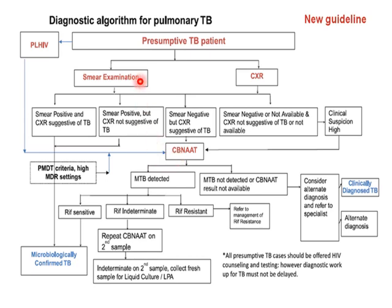The presumptive TB patient is sent for smear examination and chest X-ray. If the smear is positive and the chest X-ray is suggestive of tuberculosis, it is microbiologically confirmed tuberculosis. If the smear is positive but the chest X-ray is not suggestive, it is still microbiologically confirmed tuberculosis because the ZN stain is positive. If the smear is negative but the chest X-ray is suggestive, you can go for CBNAAT. If the smear is negative or not available, and chest X-ray not suggestive or not available, but clinical suspicion is high, you can also go for CBNAAT.